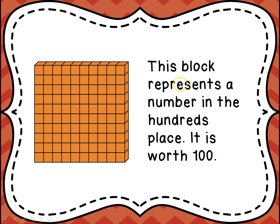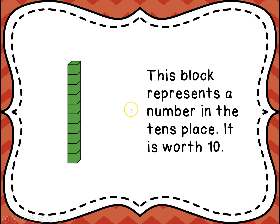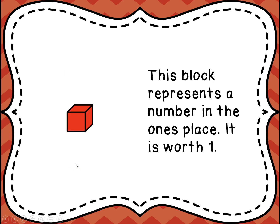This block represents a number in the hundreds place, so this particular picture that we're looking at is worth one hundred — there are one hundred squares. And this block represents a number in the tens place; it's worth ten because each one of these rods has ten squares. And this block represents a number in the ones place; it's only worth one because there's only one of these cubes here.